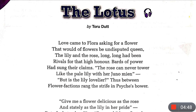'The rose can never tower like the pale lily with her Juno mien.' Here Juno is the wife of Jupiter, known for her beauty. 'Tower' means to stand tall and upright. The rose can never stand as tall and proud as the pale lily, which stands in its pride and beauty like Juno.